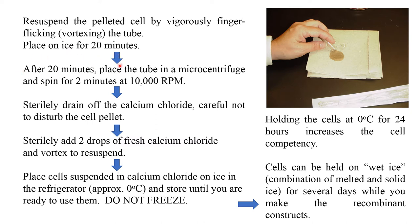After 20 minutes, place the tube in a centrifuge and spin for two minutes at 10,000 rpm. Then carefully drain off the calcium chloride without disturbing the cell pellet. Again add two drops of fresh calcium chloride and vortex to re-suspend. Then place the cells suspended in calcium chloride on ice in the refrigerator.